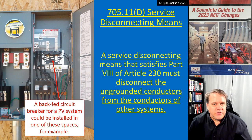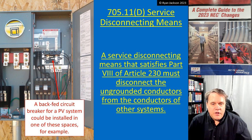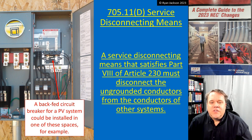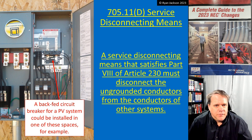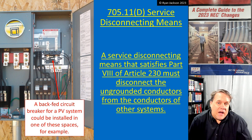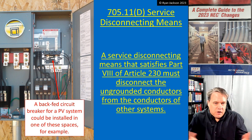Service disconnect: 705.11(D). A service disconnecting means that complies with Article 230 must disconnect the ungrounded conductors from the conductors of other systems. So if we're adding a service disconnect — which we probably are — we need to follow Article 230.